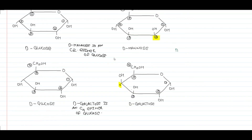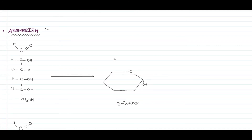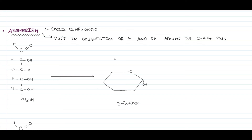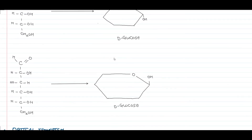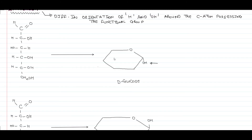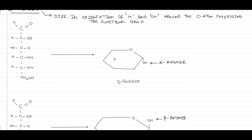The next type of isomerism is anomerism, which usually occurs in cyclic compounds. It arises due to the difference in orientation of H and OH around the carbon atom possessing the functional group. For example, in D-glucose: if the hydroxyl group is pointing downward it is termed the alpha anomer, whereas if the hydroxyl group is pointing upward it is termed the beta anomer.